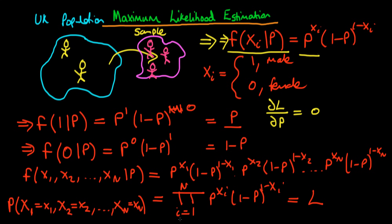The problem with differentiating this function as it stands is that because it's a product, that's actually quite a complicated thing to do — we'd essentially have to use the product rule. With n things in our product, it's going to be a really complicated differentiation. So as it stands it looks like things might be difficult, but in fact they're not. We're going to talk about potential solutions to this problem in the next few videos and how we can actually derive the maximum likelihood estimator of p — in this case the probability that an individual is male.